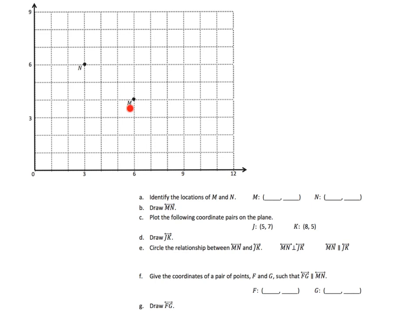First, let's identify the locations of M and N. I can see that M is located at (6, 4) and N is located at (3, 6). Now it says to plot the coordinate pairs on the line, so I'll plot (5, 7) and (8, 5). Five seven is right there, and eight five — here's eight and there's five — so eight five right there.